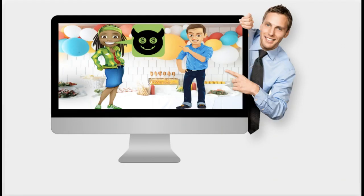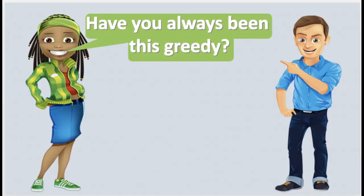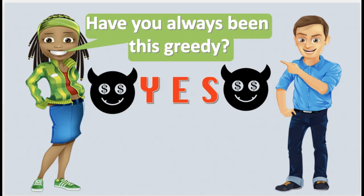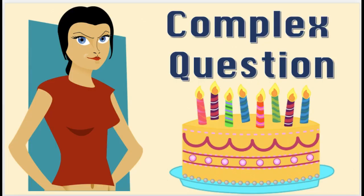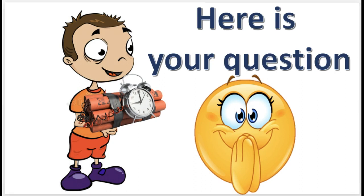Alright, let's take a closer look at what just happened. Cindy asks Frank if he has always been this greedy. If Frank answers yes, then he admits that he is greedy. But if he answers no, then he implies that he's been greedy in the past. This is a complex question. A complex question traps a person into admitting something that they may not want to admit. And it's easy to recognize, because it always ends in a question mark, but the question actually consists of two or more questions combined.